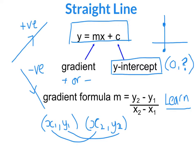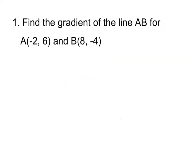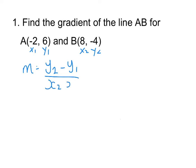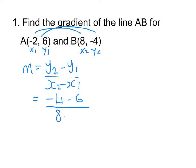Let's look at a couple of examples. Example one: find the gradient of the line AB that goes through the coordinates minus 2, 6 and 8, minus 4. I'm going to label my coordinates x1, y1, x2, y2. Starting right to left on top, we've got minus 4 take away 6, and on the bottom, right to left, we've got 8 minus minus 2. There's a double negative there, so the two negatives together turn into a plus. This gives us negative 10 over 10, which simplifies to negative 1. So this straight line has a gradient of negative 1.